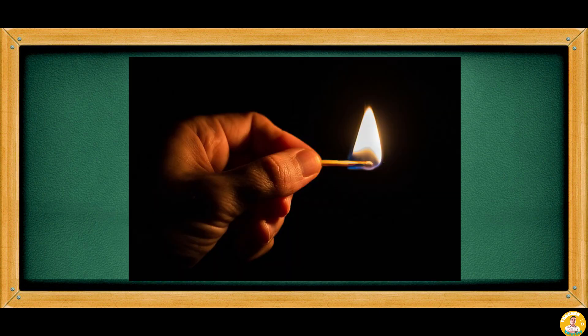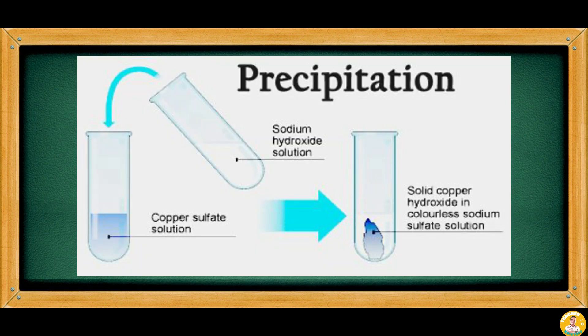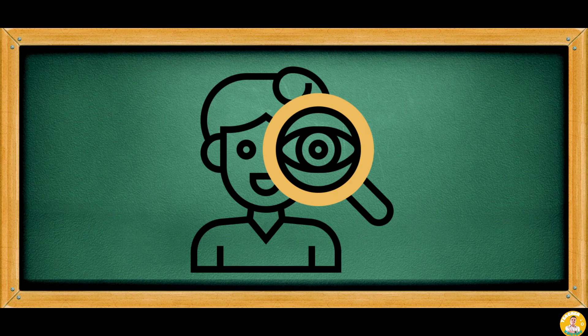Some evidences of chemical change are the production of heat and light, the formation of bubbles, or the formation of a precipitate — a solid within a solution. Observe the following videos and discover more about changes in materials when heat is applied.